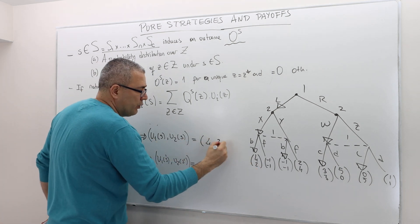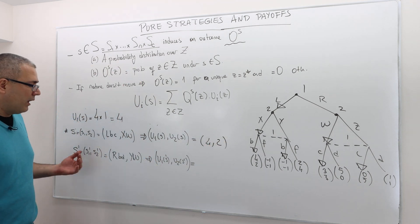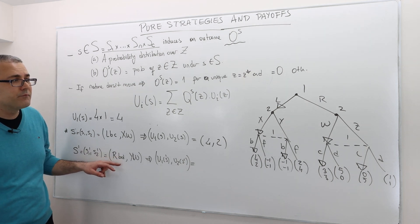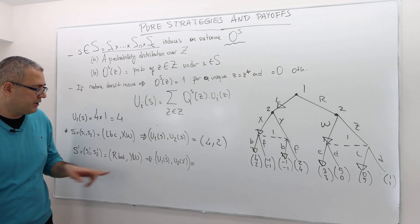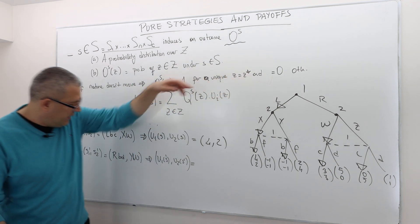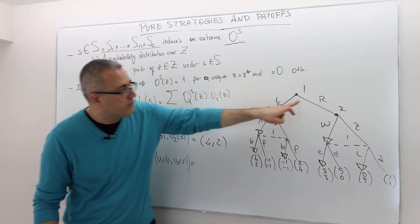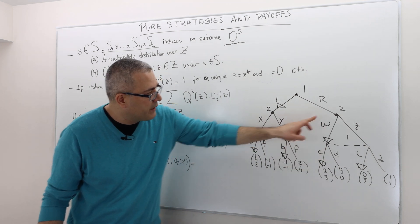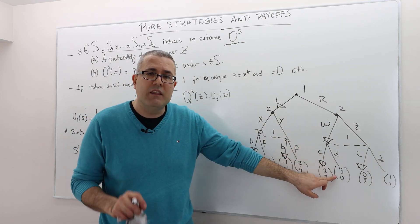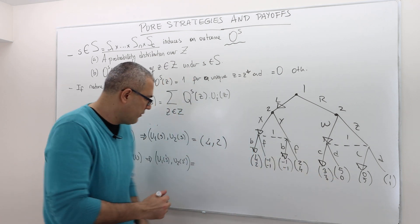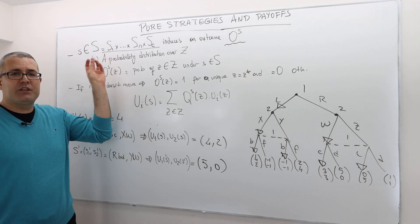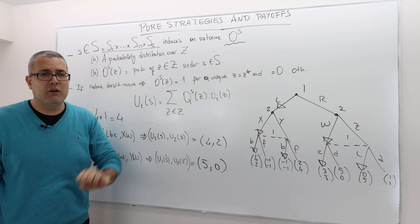Player two's expected payoff is two. For the second example, player one plays RBD and player two plays YW. Looking at R and D — and player two is playing W — so RWD is the realized history. Therefore player one gets a payoff of five and player two gets zero. This is how we relate each strategy profile to a payoff.